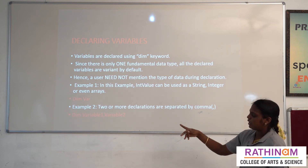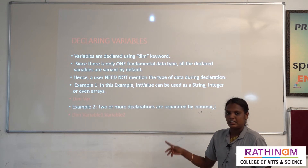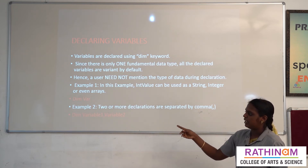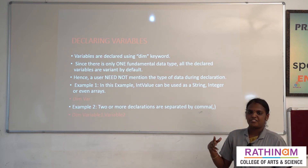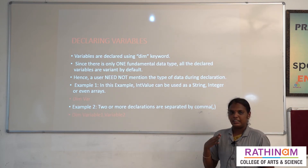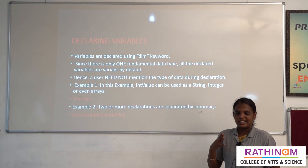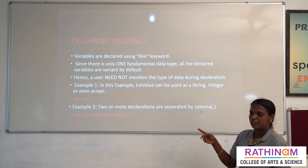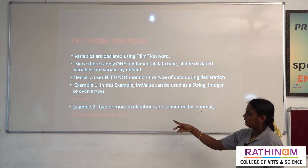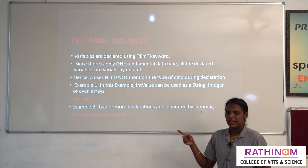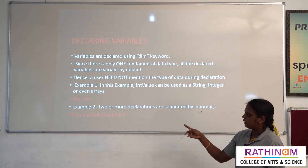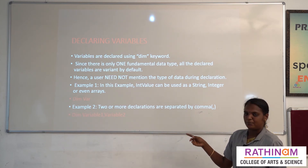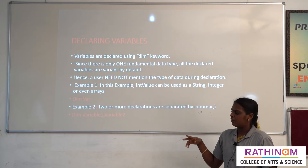Here is an example of how to declare a variable in VBScript: dim is the keyword and var is the variable name, which is user-defined. You can define any name, typically based on real-life objects relevant to your program. You can also declare more than one variable in a single line, with variable names separated by commas. You can declare any number of variables in a single line.